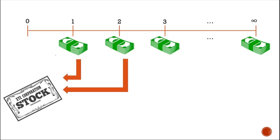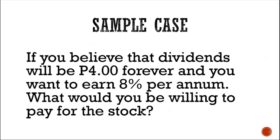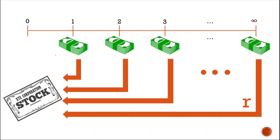To illustrate, let us refer to the following sample case. If you believe that dividends will be 4 pesos forever when you buy a preferred stock, and you want to earn 8 percent per annum, what would you be willing to pay for the stock? The value of an asset is the present value of the future cash flows it is expected to generate. For stocks, the dividends are the future cash flows — that is 4 pesos annually in the given case.